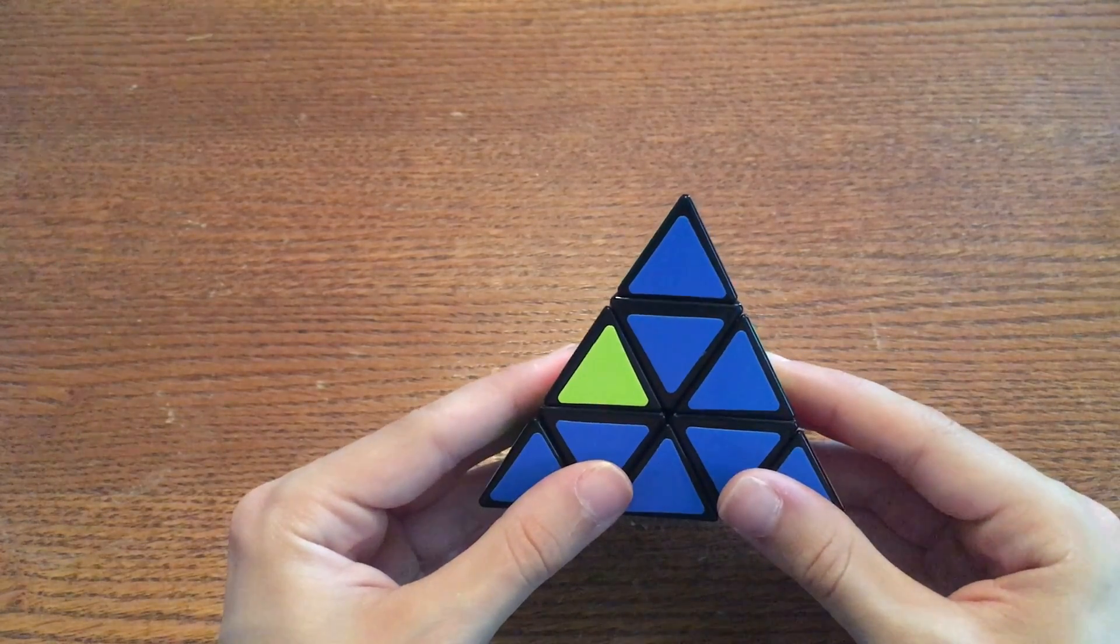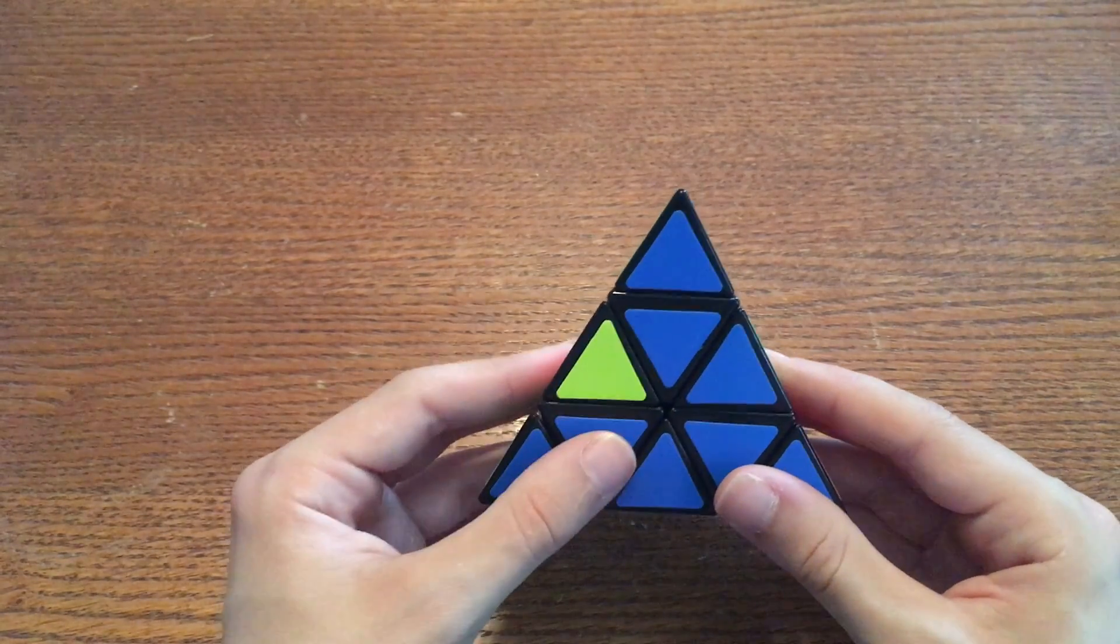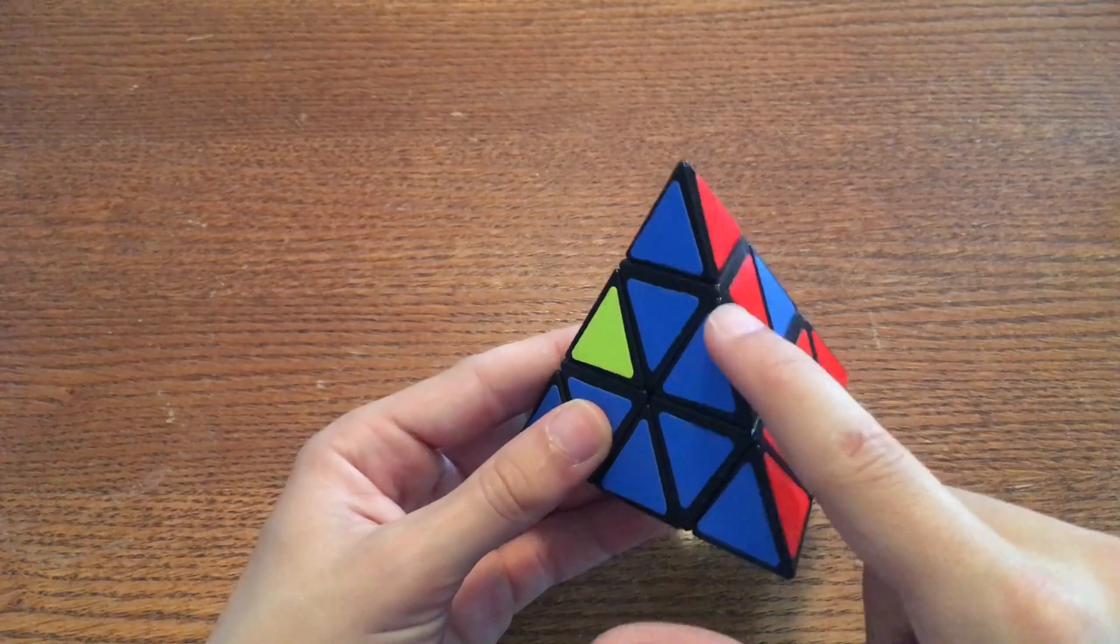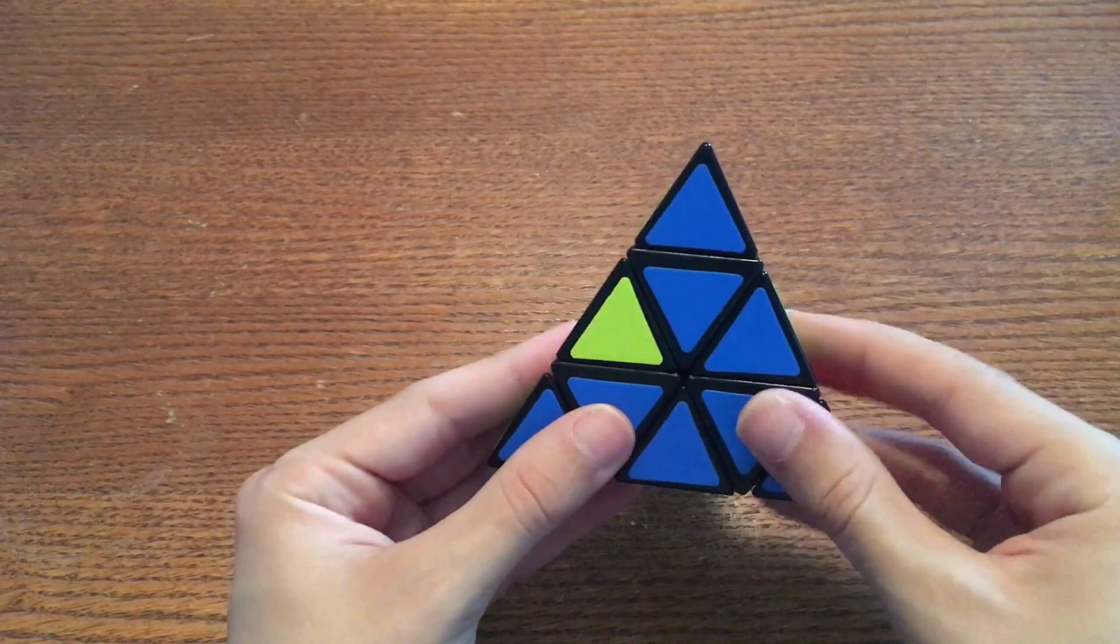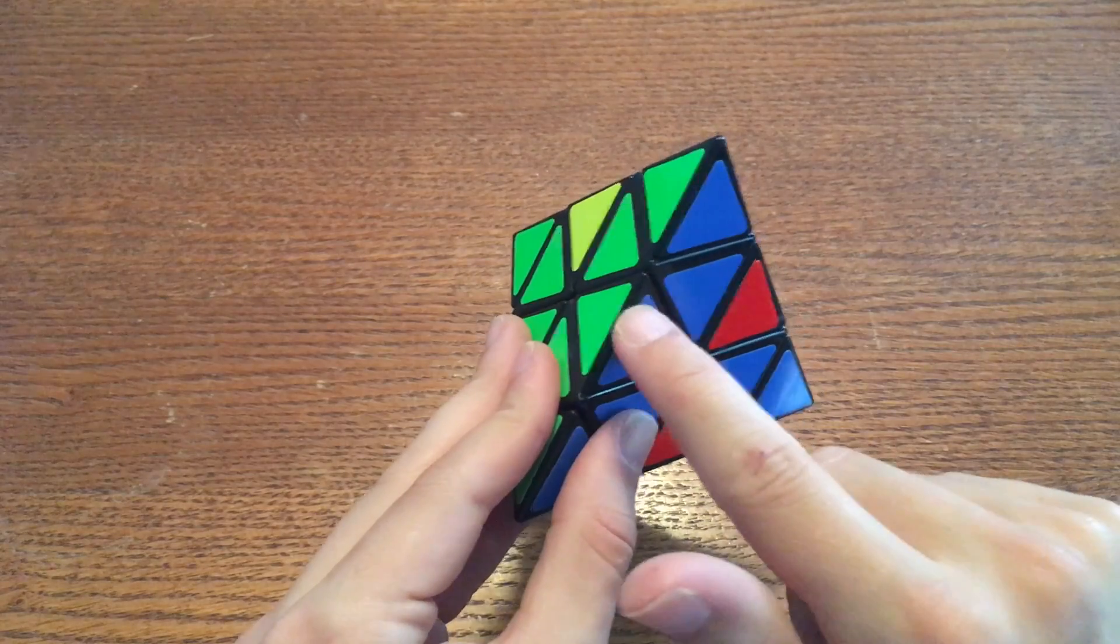And if you do the algorithm with the left side going down first, you guessed it, this edge here moves over to the left. It's back where it started.